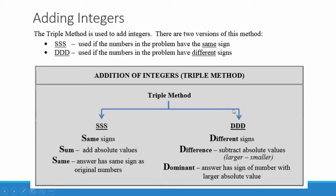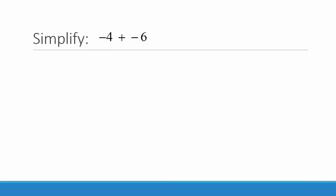If the signs are different you will use the right hand side of this chart. If you have different signs you're going to take the difference, which means subtract the larger absolute value minus the smaller absolute value. The sign will come from the sign of the dominant number — the sign of the larger absolute value number.